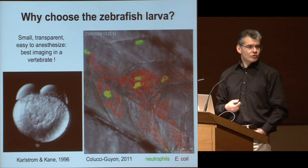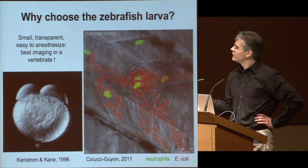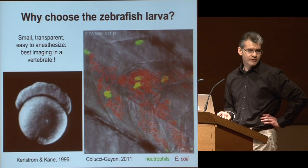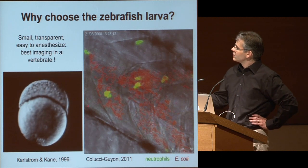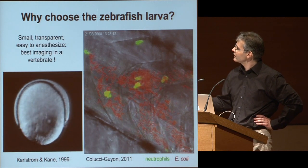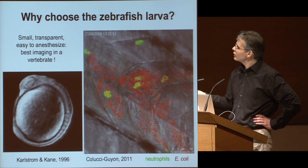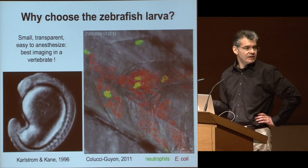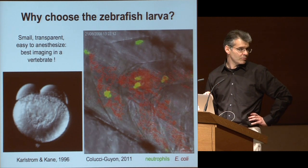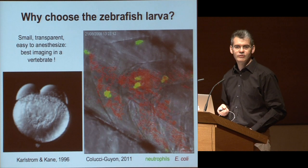Why would one choose a zebrafish larva? The key point is that zebrafish are excellent for imaging. You've probably already seen the classical movie of the first 20 hours of zebrafish embryo development. This is relatively easy to capture because fertilization is external, so you can see all the events — gastrulation, the formation of the head, the somites, and so on. In two days, you basically have an almost independent organism that has formed. This is why the zebrafish has become a classical model for developmental biology, and many tools have been generated for this purpose.